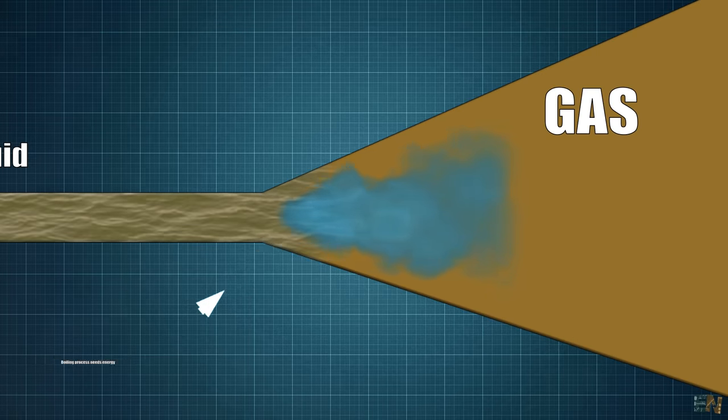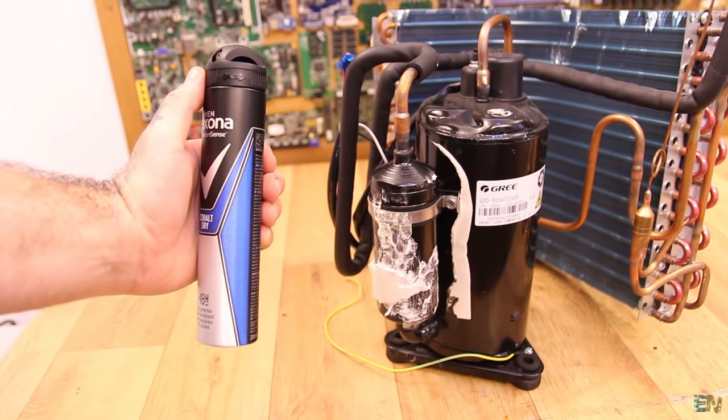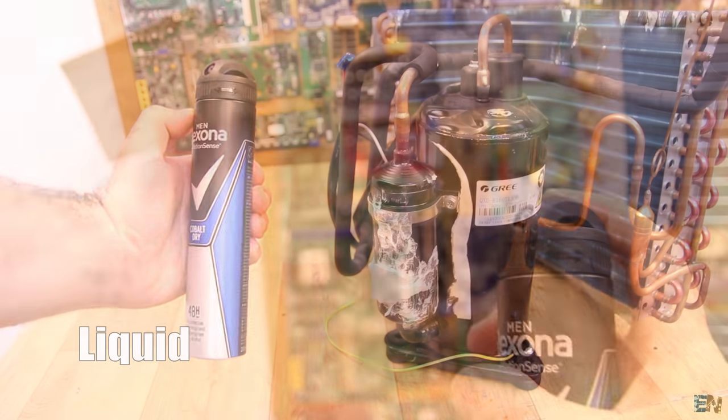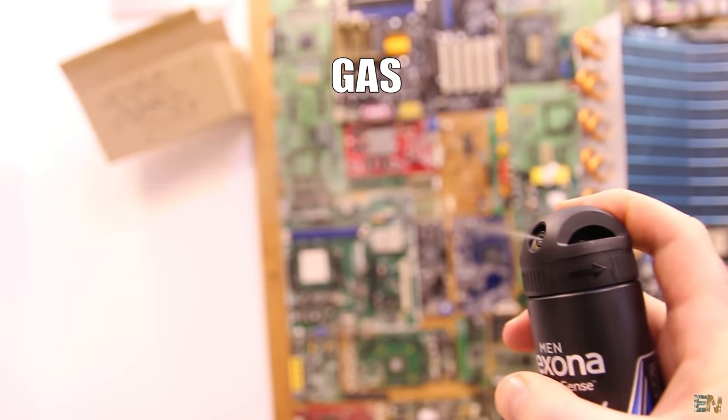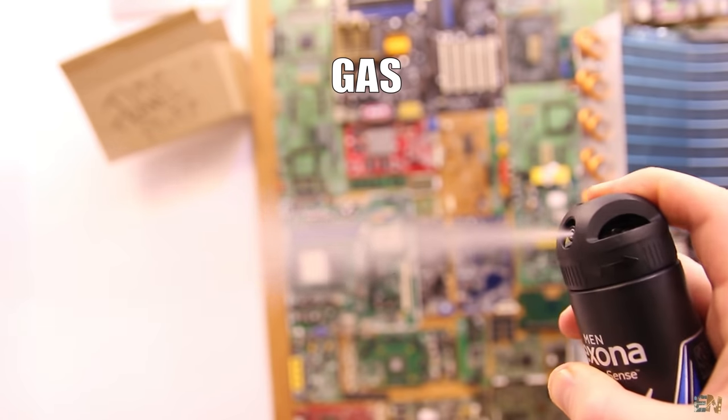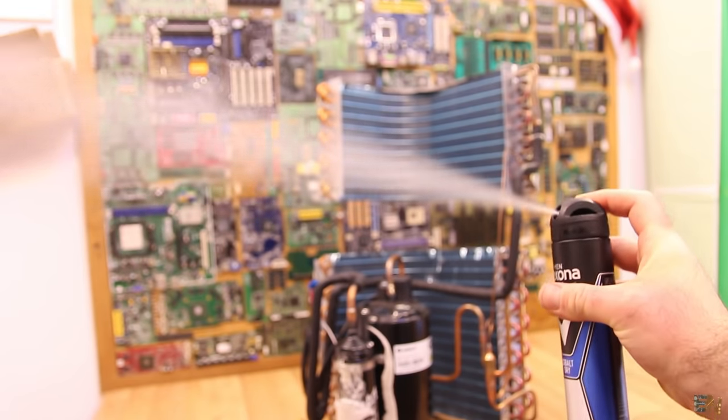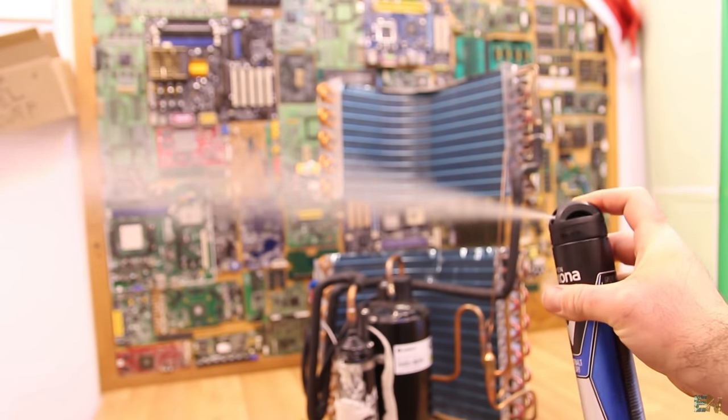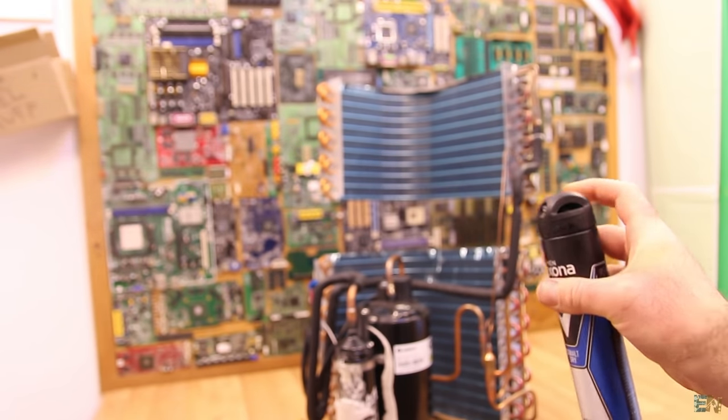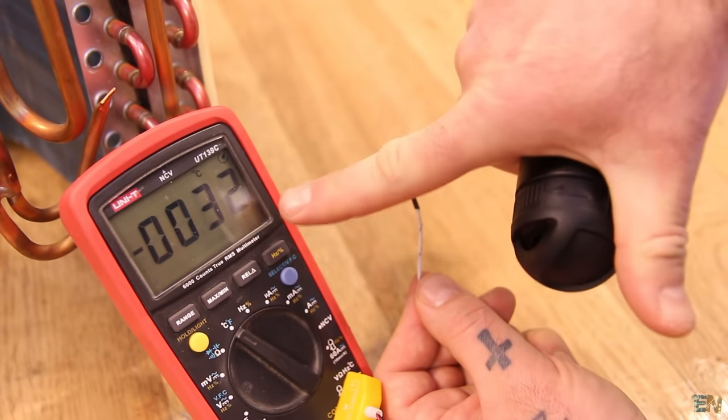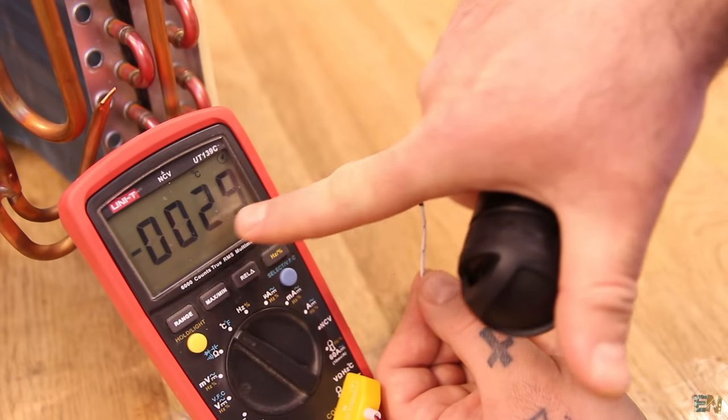To understand better, just imagine a deodorant spray. Inside of the can, the substance is in a liquid state at high pressure. But as soon as you release it outside, since the pressure is much lower, it automatically boils turning into a gas. This boiling process needs energy and that is absorbed from within the liquid and that's why you feel the spray very cold. As you can see, the spray goes down to minus 30 degrees or lower.